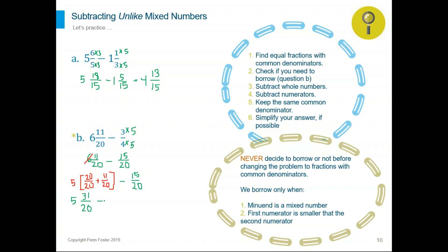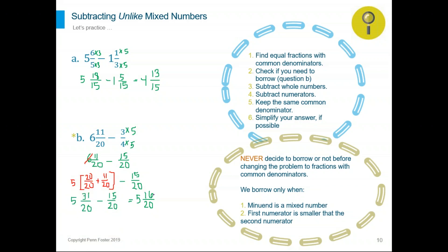The second fraction is 15 over 20. Now subtract the numerator: 31 minus 15 is 16, and 20 stays in the denominator. Five minus nothing is five. I can simplify this fraction further because I see a common factor between 16 and 20 — both are even numbers. I can divide over four. 16 over four is four, and 20 over four is five. The final answer in simplified form is five and four fifths.